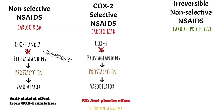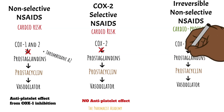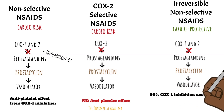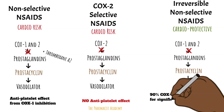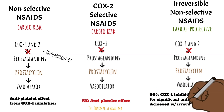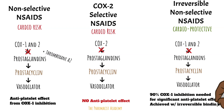For irreversible non-selective NSAIDs like aspirin, the mechanism is the same as the regular non-selectives, with the key difference being that it binds irreversibly. Research has shown that 90% COX-1 inhibition is needed for a significant antiplatelet effect, which is achieved with this irreversible binding.